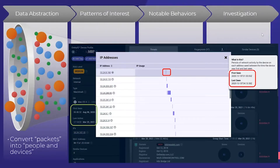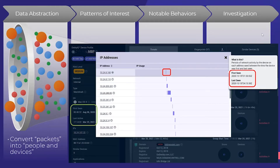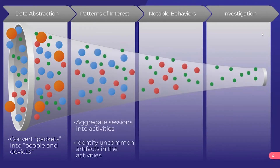Pretty much every network analytics technology would see the 100 IP addresses that make up this device as 100 different devices. But now this is one device with 100 different IP addresses over the course of almost nine months. This is step number one — a prerequisite. You have to solve this problem before you can do any more accurate analytics capable of detecting more than signatures could 20 years ago.